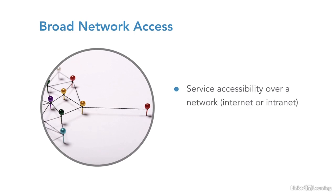The internet applies when talking about a public cloud provider, while an intranet applies in the context of a private cloud. Broad network access also implies that cloud services are accessible from any type of device — desktop, laptop, tablet, smartphone, or even specialized devices like medical equipment. From a security perspective, public cloud services are available over the internet, meaning more malicious users could attempt to break in. That's not to say cloud computing is less secure than on-premises, but it is a consideration.